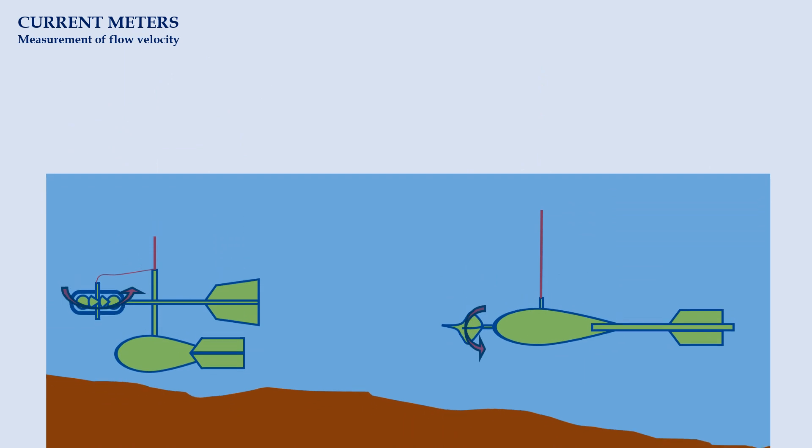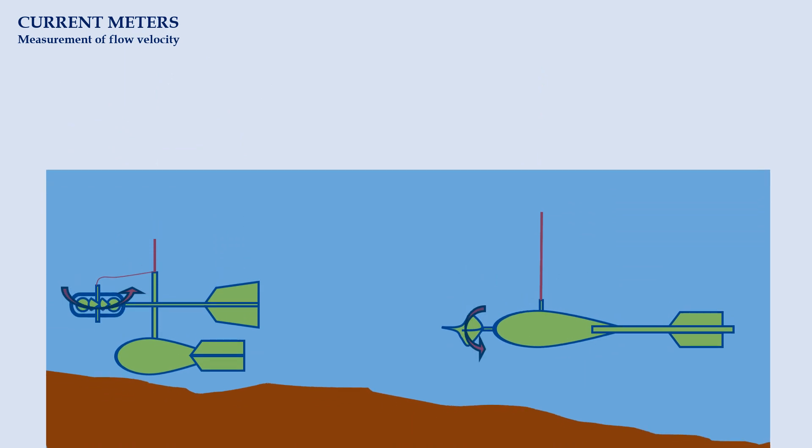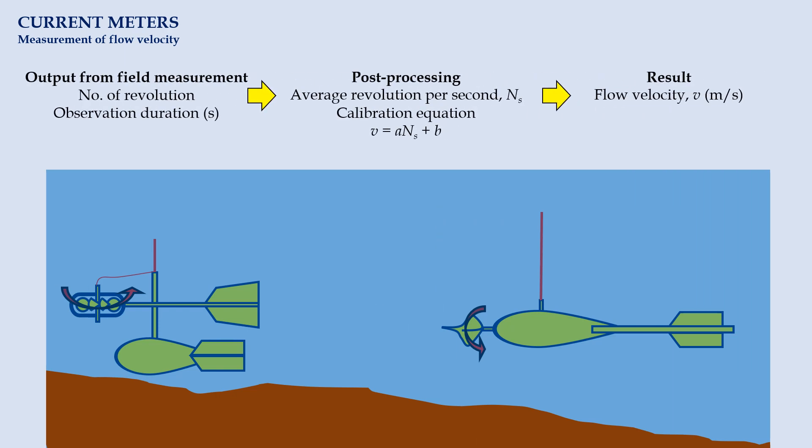A current meter can register the flow velocity ranging from 0.15 to 4 meter per second. The output from the measurement will be the number of revolutions throughout the observation period. We will need to determine the average number of revolutions per second afterwards. The stream velocity is calculated using this value while applying calibration equation. Constants A and B are unique to each instrument and therefore they are usually determined prior to the data collection process.